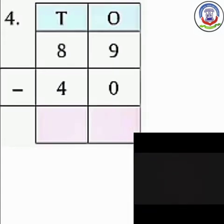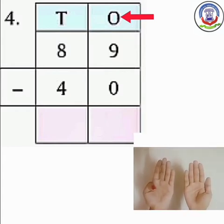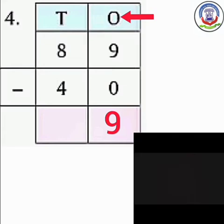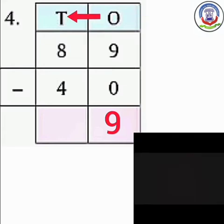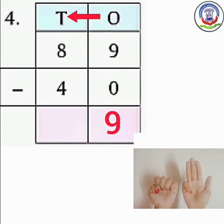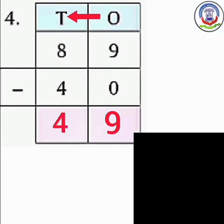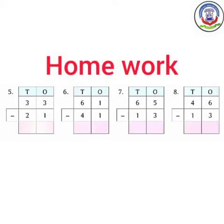Number 4: 89 minus 40. पहले हम ones column में subtract करेंगे. Numbers are 9 and 0. जब हम कोई भी नम्बर में से 0 माइनस करते हैं तो हमें answer same मिलता है. So we will write here 9. अब हम 10s column में subtract करेंगे. Numbers are 8 and 4. Open 8 fingers and close 4 fingers — 1, 2, 3, 4. So we will write here 4. The difference is 49. Students, the rest of the exercise you have to do by yourself.